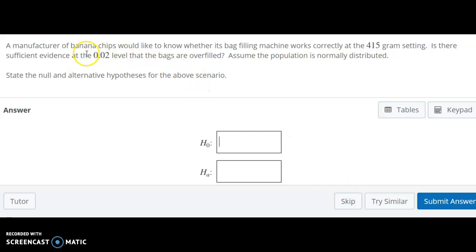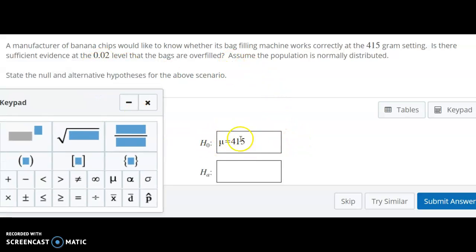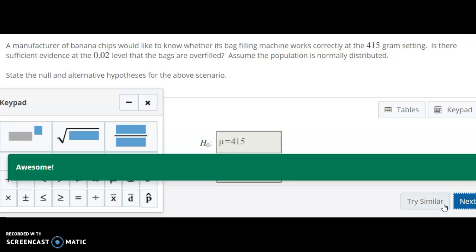This one's a little different. I would like to know if the bag fills correctly at the 415 grams setting. The bags are overfilled. So here we do have an average. So we need our population mean, which would be right here. The mean equals 415 grams. Is there sufficient evidence that the bags are overfilled? So the alternative here would be that our mean is actually greater than 415. Let's submit those.